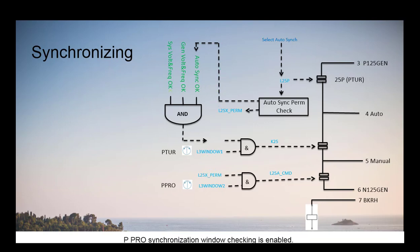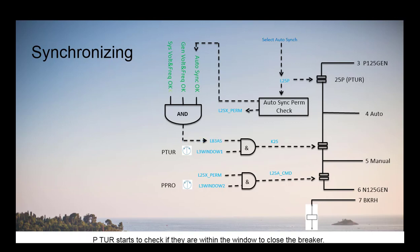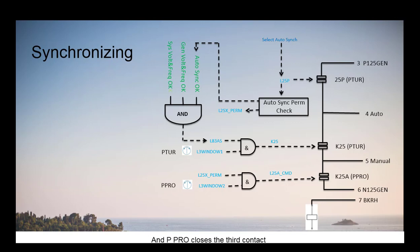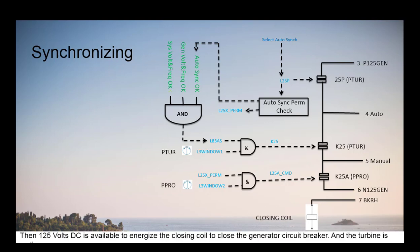P-PRO synchronization window checking is enabled. The logic checks if the generator and bus frequency and voltage are within limits. P-TUR starts to check if they are within the window to close the breaker. P-TUR closes the second contact to close the generator breaker, and P-PRO closes the third contact. Then 125V DC is available to energize the closing coil to close the generator circuit breaker, and the turbine is online.